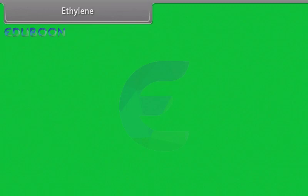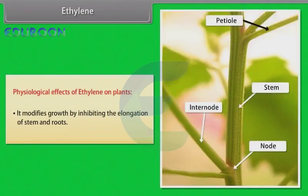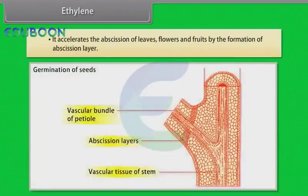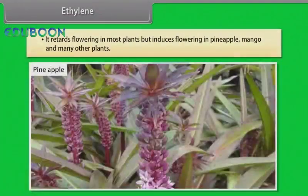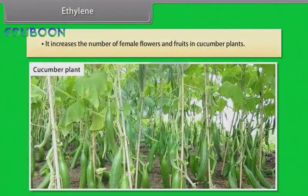Ethylene — physiological effects on plants: It modifies growth by inhibiting the elongation of stem and roots. It inhibits the growth of lateral buds and causes apical dominance. It accelerates the abscission of leaves, flowers and fruits by formation of an abscission layer. It retards flowering in most plants but induces flowering in pineapple, mango and many other plants. It increases the number of female flowers and fruits in cucumber plants.